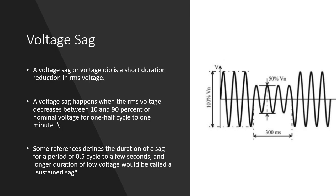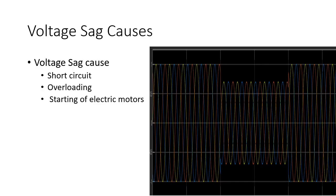What causes voltage sag? Cause number one is a short circuit in the system, or overloading — for instance, a heavy load suddenly turning on, or starting a heavy electric motor. You might have noticed a sudden jerk in the voltage when you turn on an electric iron or other heavy loads. This causes a voltage sag in the system.